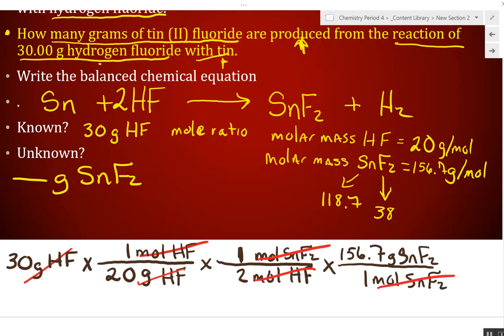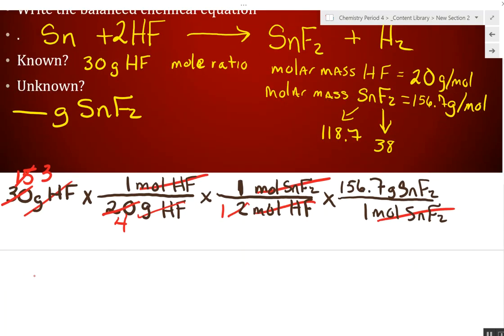Get that from the balanced equation. Now, we want to end up at grams of SNF2 from moles of SNF2. What do we say the molar mass is of tin-2 fluoride? 156.7. Now, let's simplify this. What units can I cancel? Grams of HF. Moles of HF. Moles of tin-2 fluoride. Now, let's try and simplify our numbers. You all have calculators. But sometimes you never know when you might have to do this by hand.